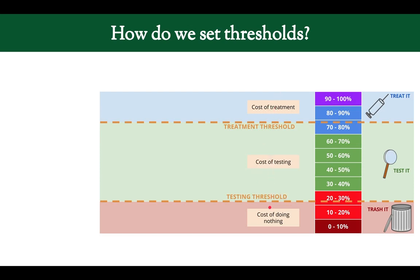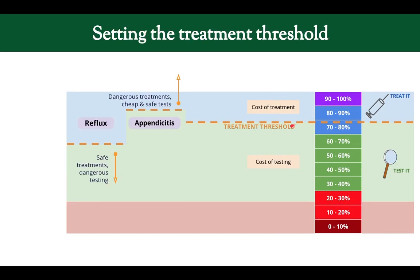So how do you set these thresholds? To do that, you need to weigh the cost of each of these zones — the cost of treatment, the cost of testing, and the cost of doing nothing — much like weighing the cost of carrying an umbrella versus not carrying one. To determine where to set the treatment threshold, we weigh against each other the cost of treatment and the cost of testing. If we move this threshold up, the testing zone becomes bigger and the treated zone becomes smaller. You want to do this when you have treatments that are dangerous — we want to be less likely to treat and more likely to test.